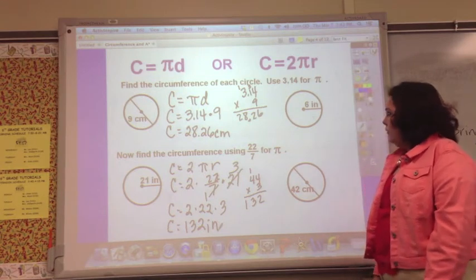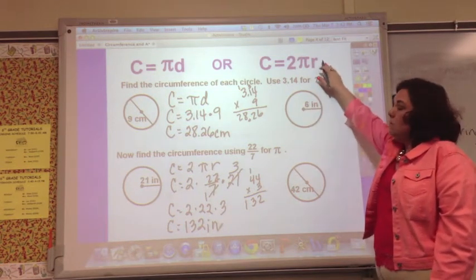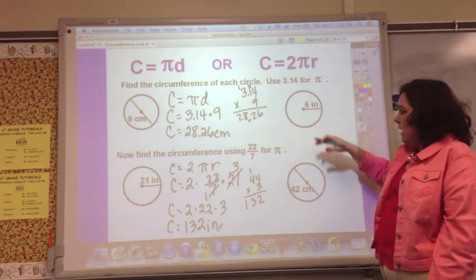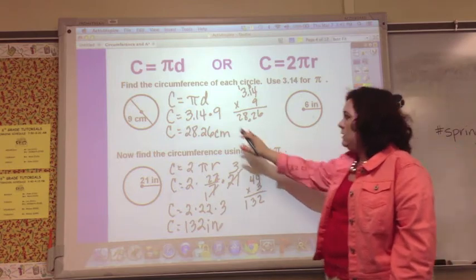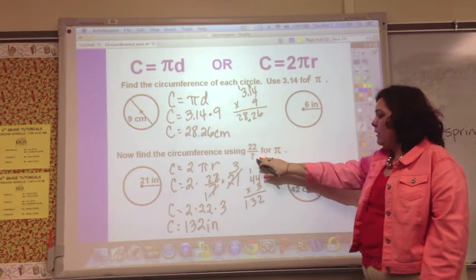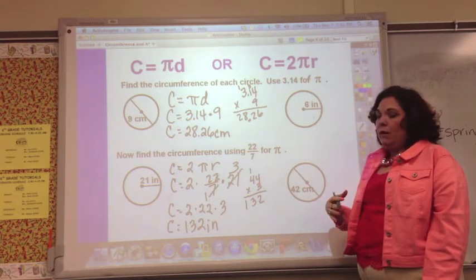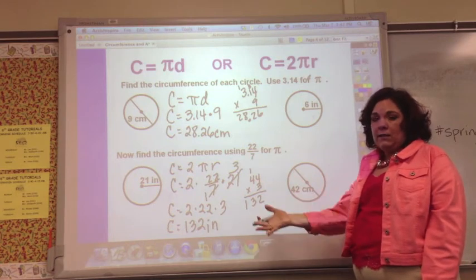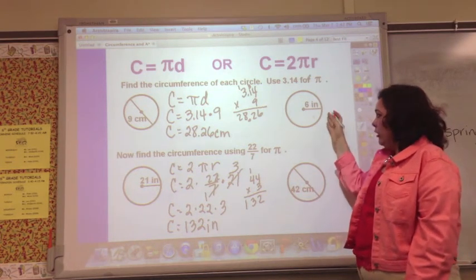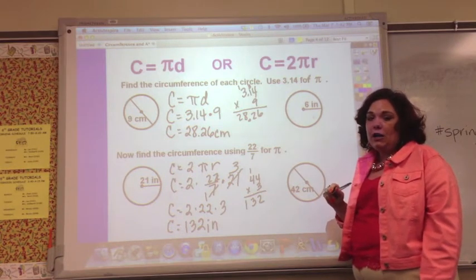Go ahead and stop the video. The thing that you need to know is that you need to use this formula because you've got the radius, and for this one you need to use this formula for the diameter. For this you're using 3.14, for this you're using 22 over 7. I'm going to erase this so it's not so messy. Work those two problems and then come back and check your work.